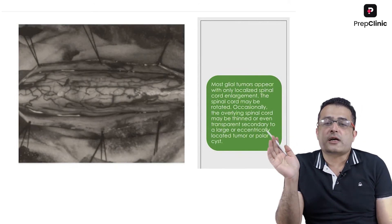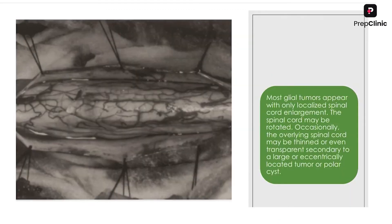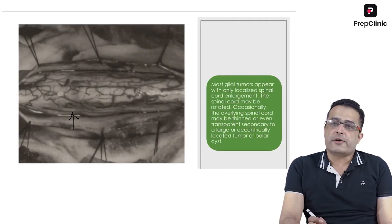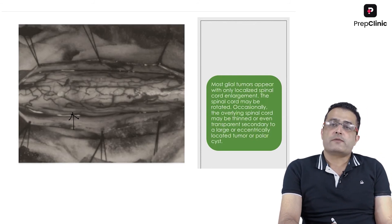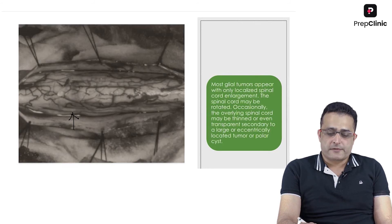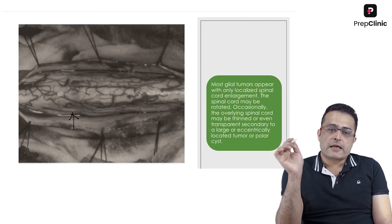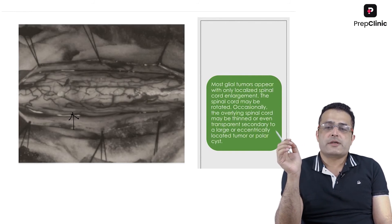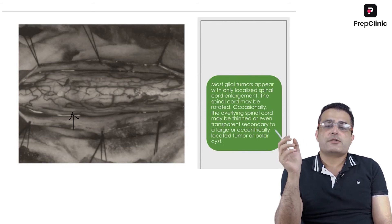This intraoperative photograph shows that most glial tumors present with localized spinal cord enlargement once the dura is opened, as seen in this patient. Retraction sutures are used to retract and evert the dura outward, providing a good intraoperative field and avoiding spillage of blood into the CSF space. Because of the eccentric location of the tumor, the spinal cord may occasionally be rotated, and the overlying cord may be thinned or even transparent — secondary to a large or eccentrically located tumor or polar cyst lying underneath.